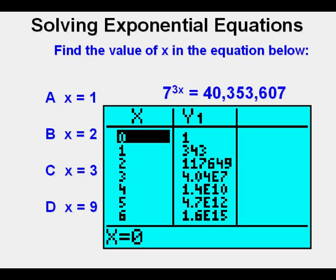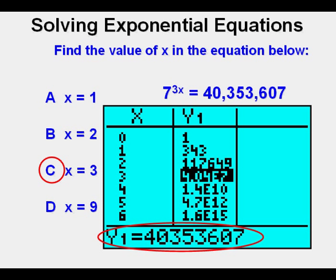It might be a little hard to recognize, but our answer is here at 4.04 times 10 to the 7th, 40.4 million. It's a lot easier to see if we use our arrow keys to move over the 4.04 times 10 to the 7th. We see the entire number below showing that 3 is the right answer for x. That's the answer choice C.